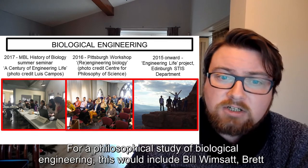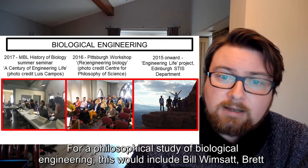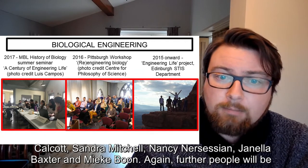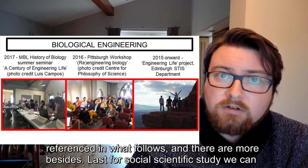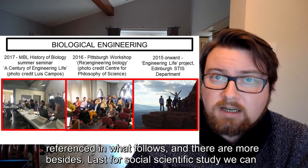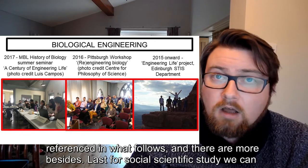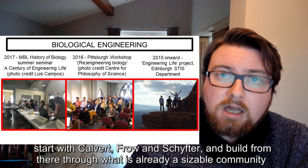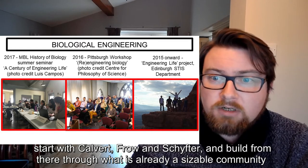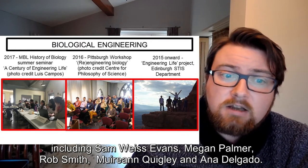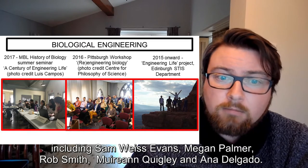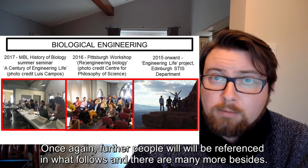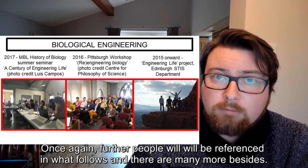For philosophical study of biological engineering, this would include Bill Wimsatt, Brett Calcott, Sandra Mitchell, Nancy Nersessian, Janella Baxter, and Mika Boone. Again, further people will be referenced and there are more besides. For social scientific study, we can start with Calvert, Frow, and Schyfter, and build from there through what is already a sizable community, including Sam Weiss Evans, Megan Palmer, Rob Smith, Miriam Quigley, and Anna Delgado. Once again, further people will be referenced and there are many more besides.